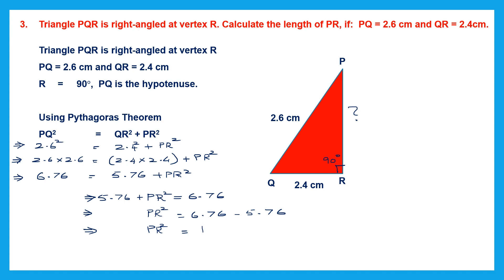To find PR alone, PR = √1. What number multiplied twice gives 1? It is 1 itself — 1 × 1 = 1. So the value of PR is 1, and since it is a length, PR = 1 centimeter. That is our answer.